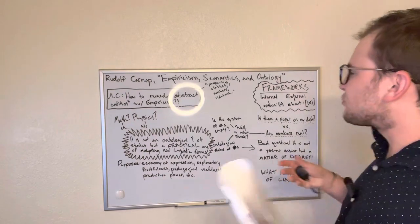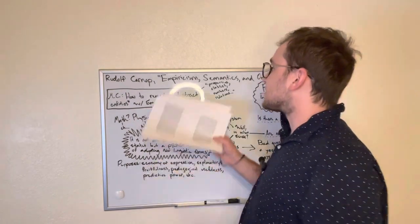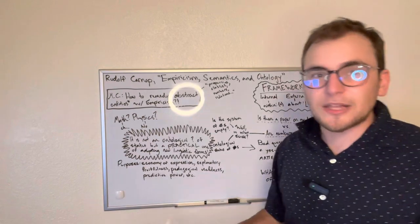That's kind of the general framework that Rudolf Carnap uses in this article, Empiricism, Semantics, and Ontology.